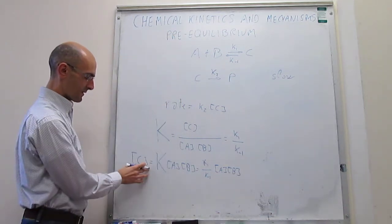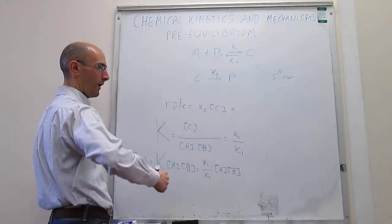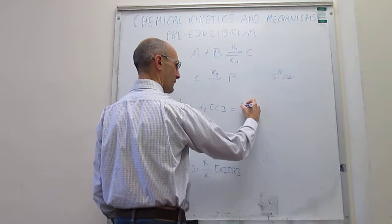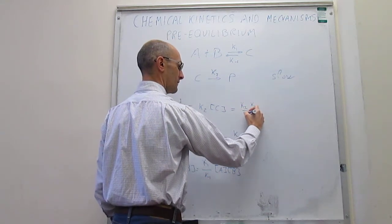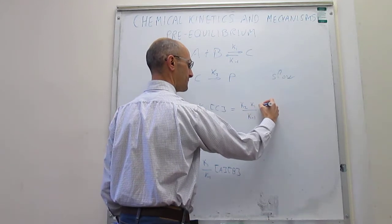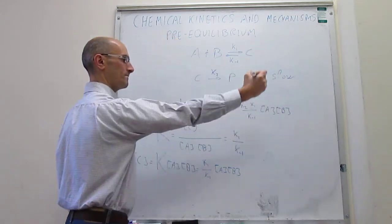We take this expression for the concentration of the intermediate, come back to the rate law, and we will find that the overall rate law for the reaction would be K2 multiplied by K1 divided over K minus 1, and then concentration of A times the concentration of B.